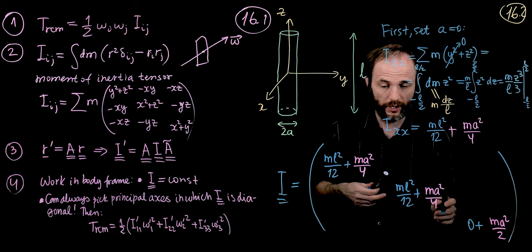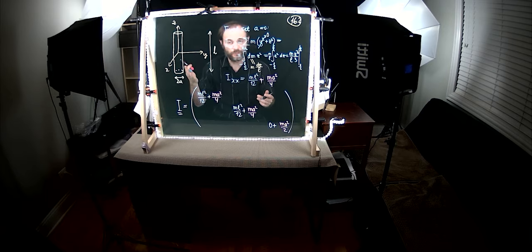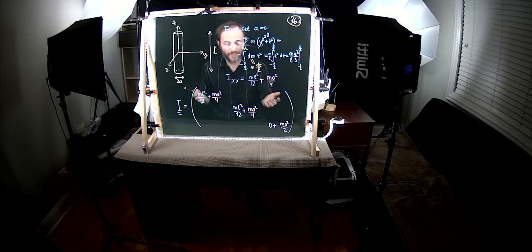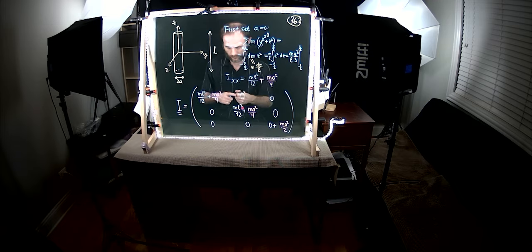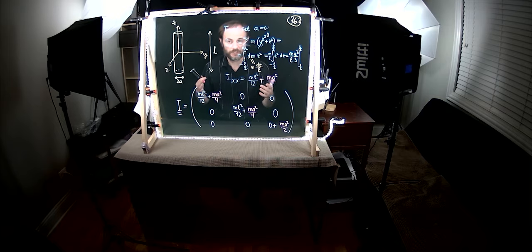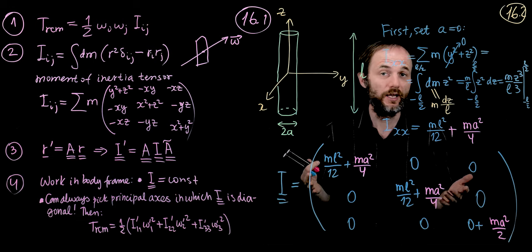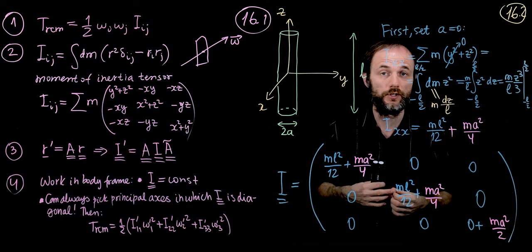So that is our moment of inertia tensor for this cylinder. I won't show how to obtain the ma squared over 4 contributions for the xx and yy terms — hopefully we can cover that during this section. Thank you for your attention. In the next part, we'll discuss the parallel axis theorem, so don't forget to do the quiz and we'll move into part 3.